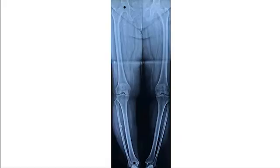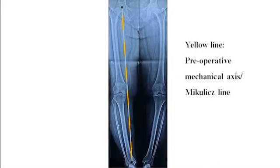In the next step, we mark the center of the femoral head and the center of the ankle joint. A line from the center of the femoral head to the center of the ankle joint is drawn, which represents the preoperative weight-bearing axis or mechanical axis. This is generally referred to as the Mikulicz line.